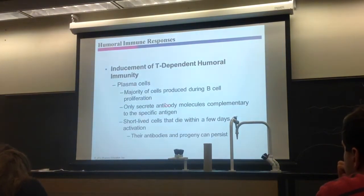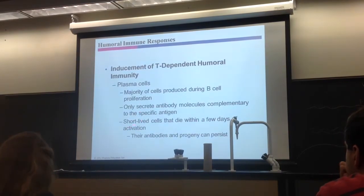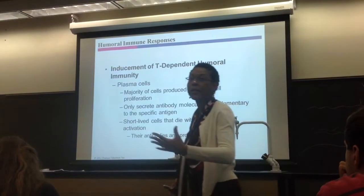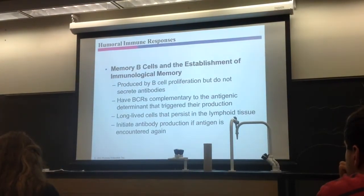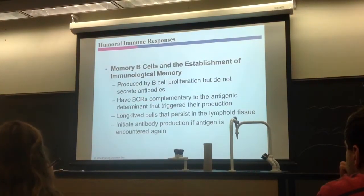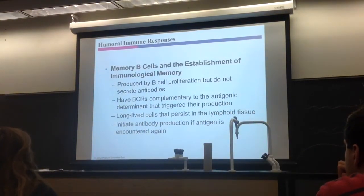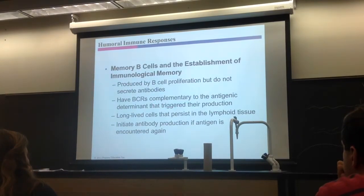Their antibodies match the epitope that started the whole process. The cells are short-lived, but their antibodies can persist for a few weeks to give you some protection. Memory B-cells don't secrete antibodies — their BCRs are stuck in their memory, ready to bind that epitope. These memory B-cells hang out in lymphoid tissue for more than 20 years. That's the basis of immunity — that's why if you've had chickenpox, you don't get it again.